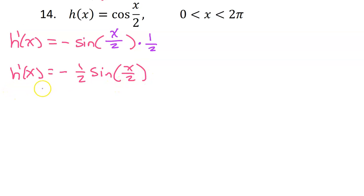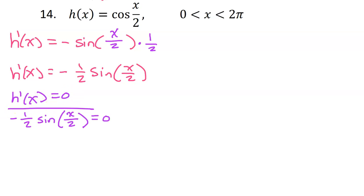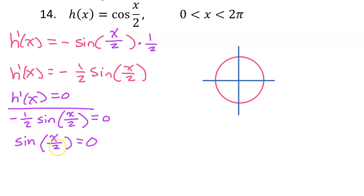Next we need to find the critical numbers. Since there are no values that cause sine to be undefined, we can focus on where h prime is equal to 0. Setting the derivative equal to 0, we have negative 1 half sine of x over 2 equals 0. If we multiply both sides by negative 2, the negative 1 half will cancel out. We get sine of x over 2 equals 0.